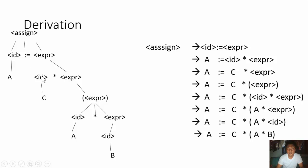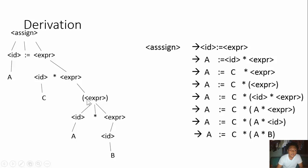On the third line, A is equal to C times open and close expression. Later you have to use open and close for the ID times expression. On the next part, A is equal to C times A open and close.